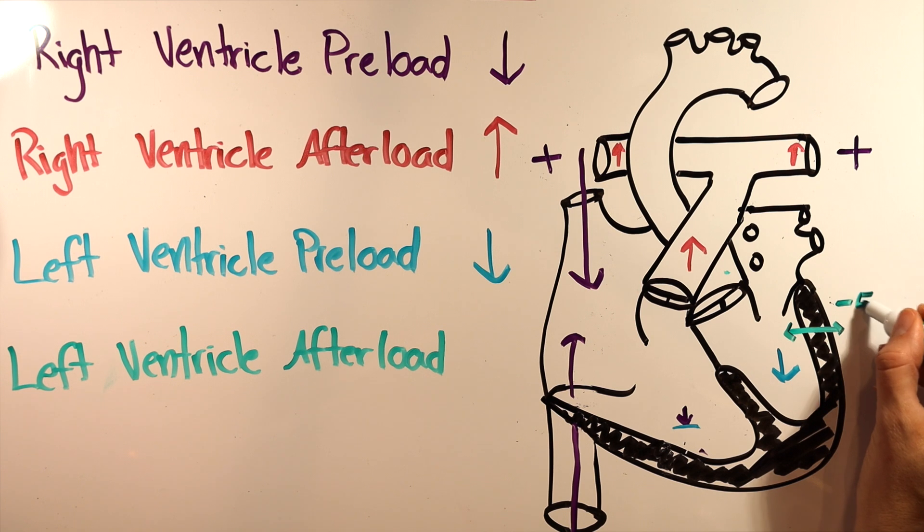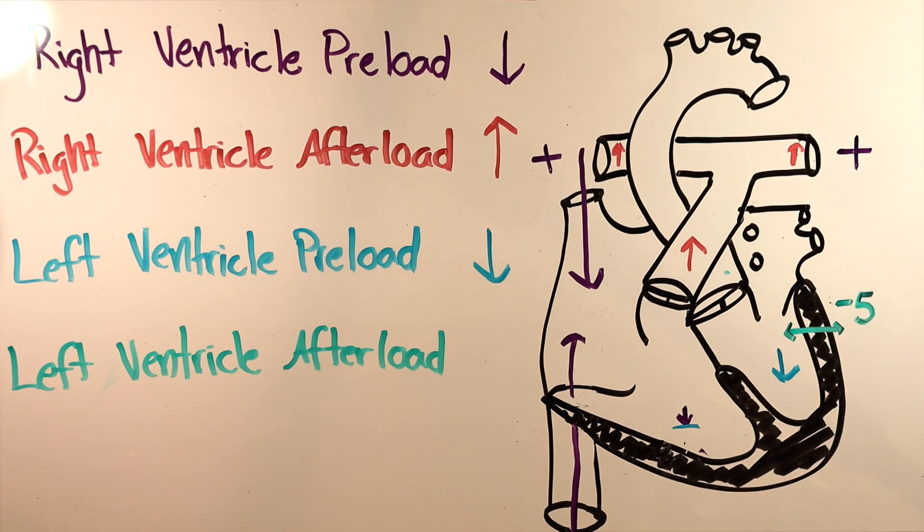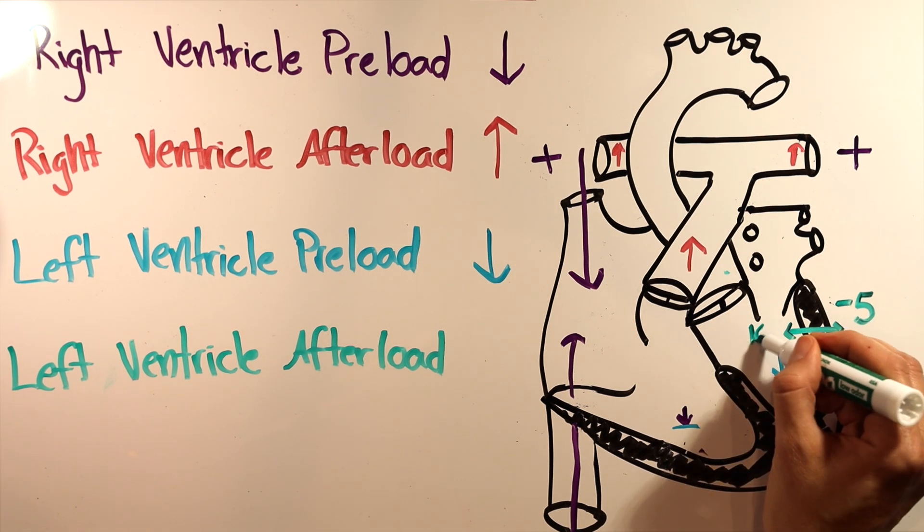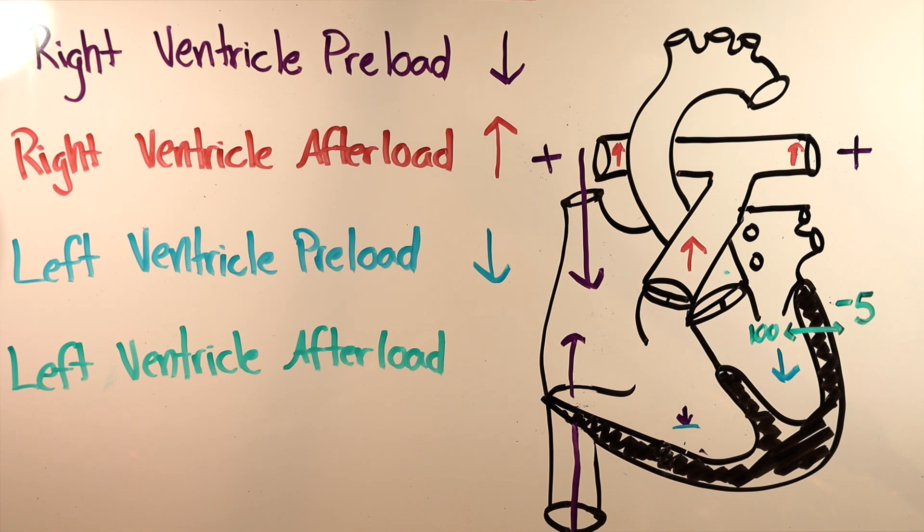So if the thoracic pressure is negative 5 with spontaneous ventilation, and the pressure needed to open the aortic valve is 100, the gradient across that wall is 105. Intubate the patient, and that gradient drops.